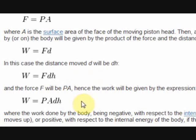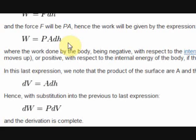We then insert Bernoulli's definition of force into this last expression to get work equals pressure times area times the differential change in height, where we note that the product of area times dh is simply equal to dV or the volume change of the volume inside of the piston and cylinder. Hence with substitution, the differential change of work is PdV and the derivation is complete.